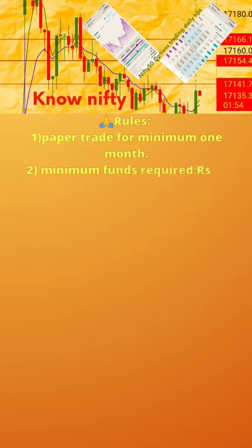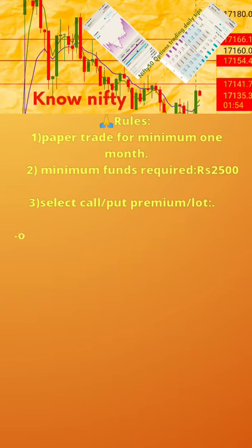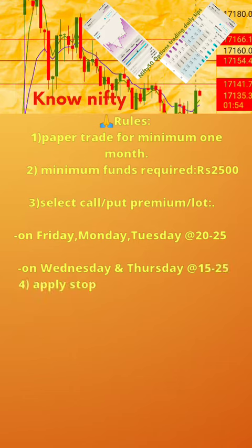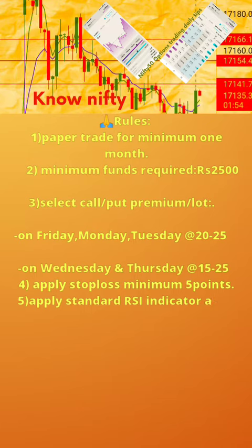Please follow the 7 rules below. 1. Paper trade for minimum 1 month. 2. Minimum funds required: 2,500. 3. Select call or put premium per lot — on Friday, Monday, Tuesday at the rate 20–25; on Wednesday and Thursday at the rate 15–25. 4. Apply stop loss minimum 5 points.